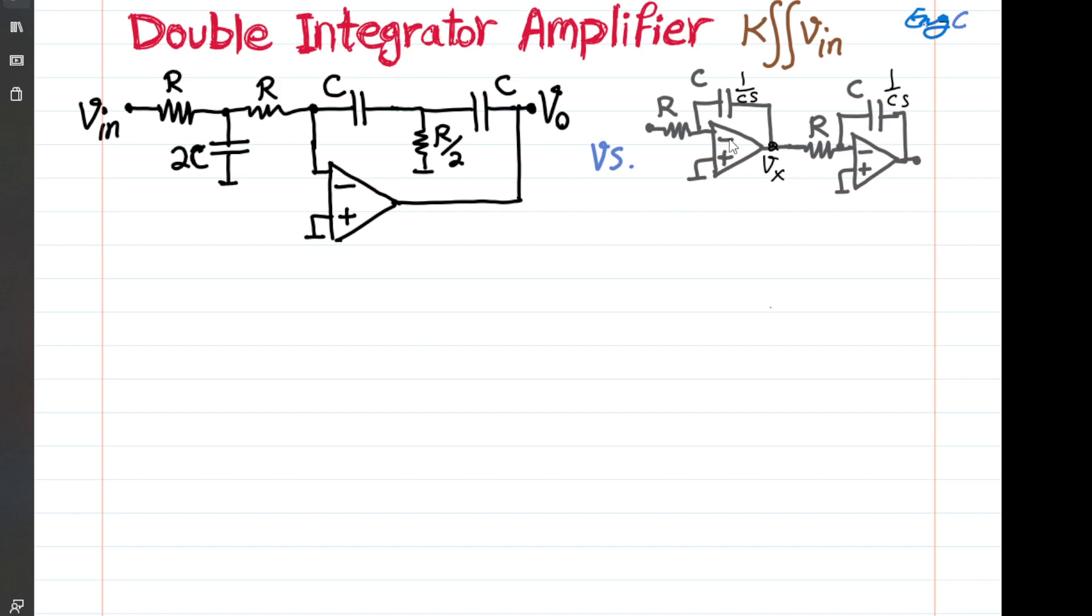So we know that Vx with respect to Vin, we know that Vx over Vin is equal to minus the impedance of the cap, which is 1 over CS, divided by R. So it becomes as simple as minus 1 over RCS, which is just an integrator.